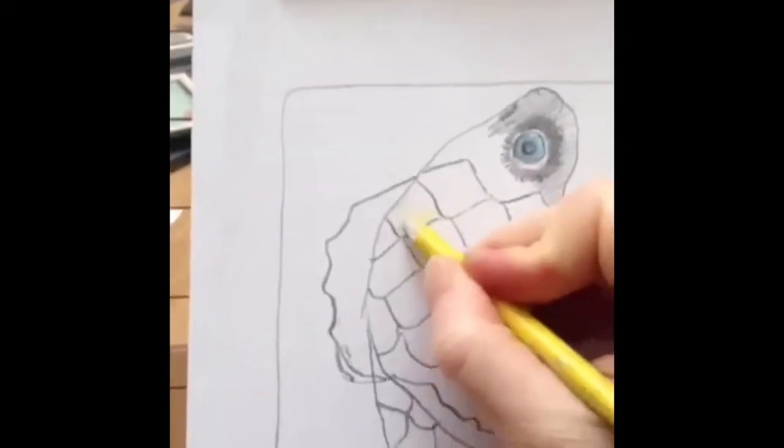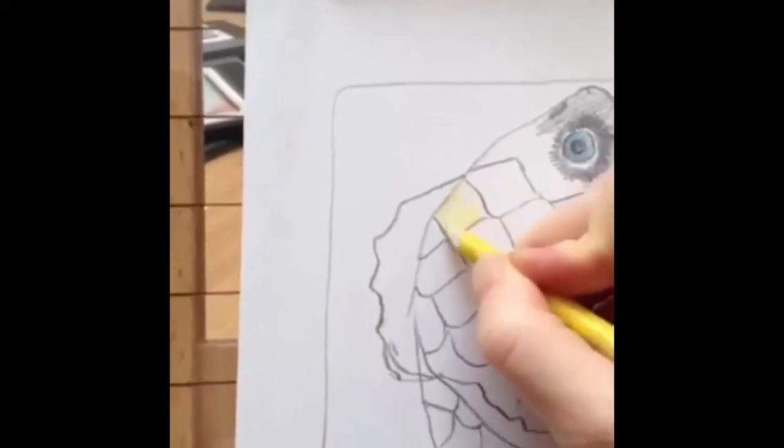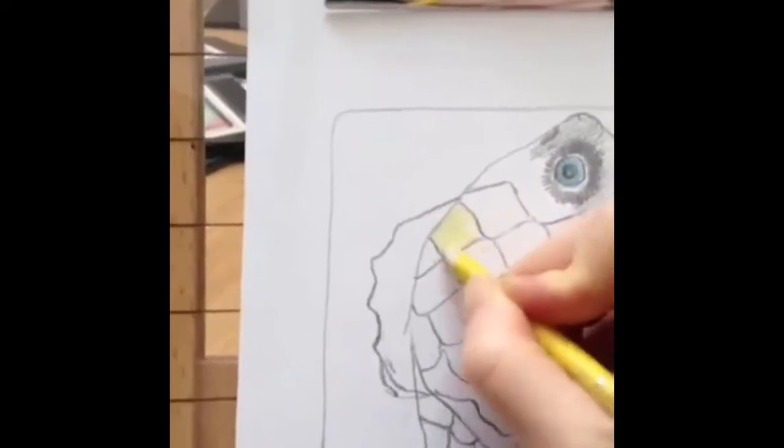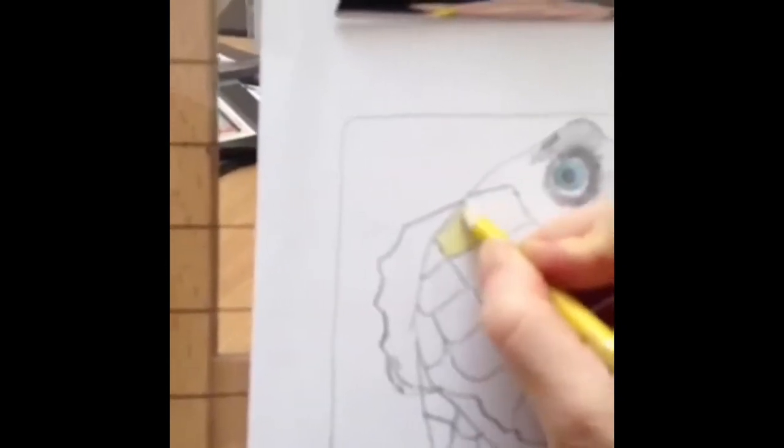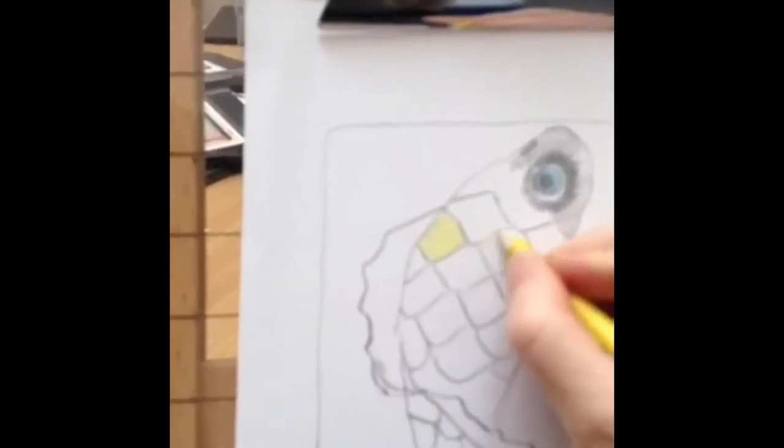There we go, coloring and filming at the same time. It's kind of tricky. I usually have a setup at home where I have some grid setup to put my camera, but I don't have that, so I'm just going to do it like this.